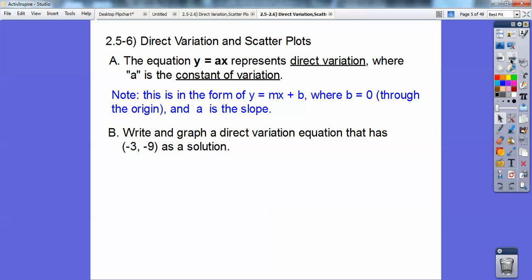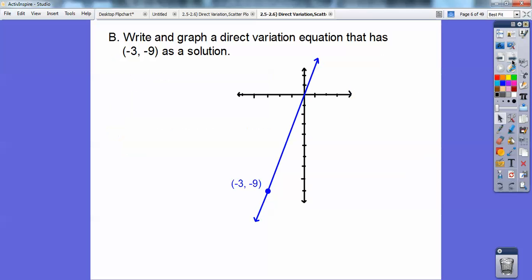So write and graph a direct variation equation that has negative 3, negative 9 as the solution. Well, since it goes through the origin, because b equals 0 on direct variation, let's go ahead and graph that guy. There's the graph of that. Negative 3, negative 9 is going through the origin. Then we just got to write an equation. So y equals ax, so you can plug in negative 9 equals a times negative 3 to get a equals 3.